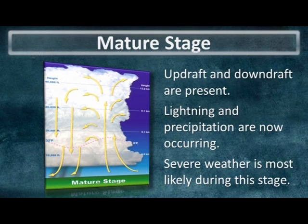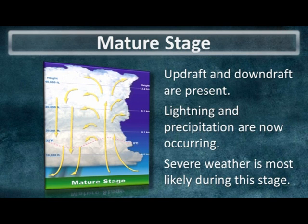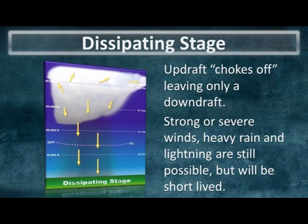In the mature stage, an updraft and a downdraft are now present, and because of this, precipitation is now allowed to reach the ground. This is also the stage of the thunderstorm's life cycle when severe weather is most likely.